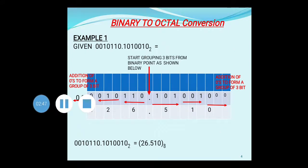In the previous example, the binary number was given without any binary point, meaning it had only an integer part. Now, consider this example: the binary number 0010110.1010010. This number has both an integer part and a fractional part. If such binary numbers are given, the step remains the same — start grouping into 3 bits.